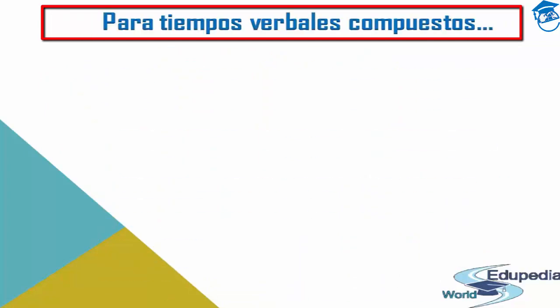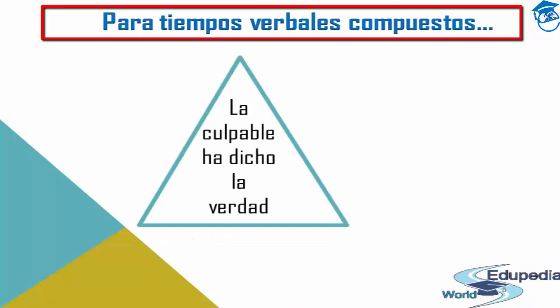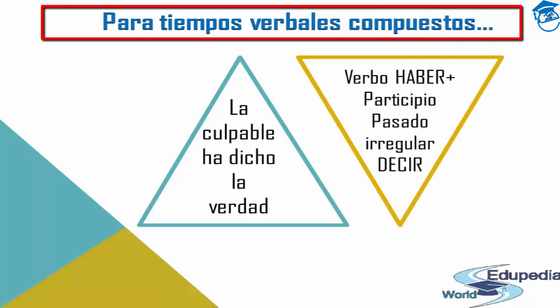You can also use the past participle for compound verb tenses — tiempos verbales compuestos — specifically the perfect tenses. For example: 'La culpable ha dicho la verdad' — the guilty woman has told the truth. Here you have the verb 'haber' plus the past participle of 'decir' — 'dicho' — which is irregular. Note that for perfect tenses, there is no gender concordance with the subject — no hay concordancia con el sujeto.